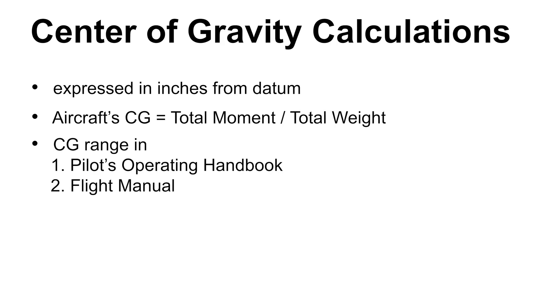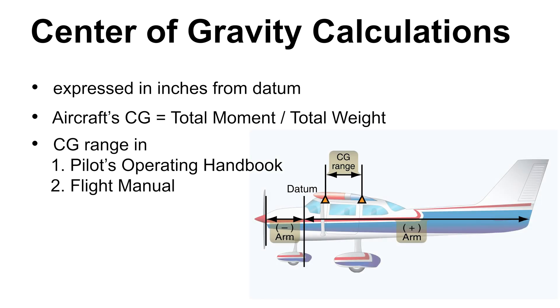In aviation, the center of gravity is expressed in inches from the aircraft's datum. You can compute the center of gravity by dividing the aircraft's total moment by its total weight. The allowed range for the center of gravity will be specified in the pilot operating handbook or drone's flight manual.